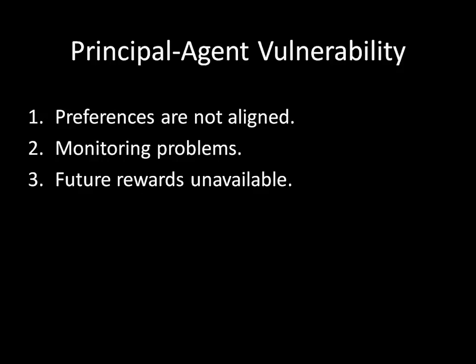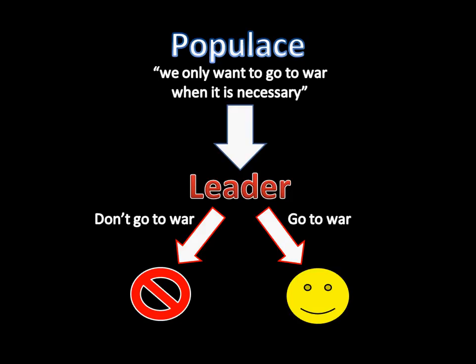That's where you get vulnerability in the principal-agent problem. In this unit, we're going to be applying the principal-agent problem to leadership explanations for war. You might have a situation where the populace says to the leader, 'we only want to go to war when it's necessary,' but the leader, for whatever reason, might want to go to war — or might not want to. What we're going to figure out is what sorts of situations lead to this problem, where the leader doesn't want to do what the populace wants and prefers going to war even though the populace would not. That wraps up this video — join me next time when we actually jump into these kinds of explanations. Take care.